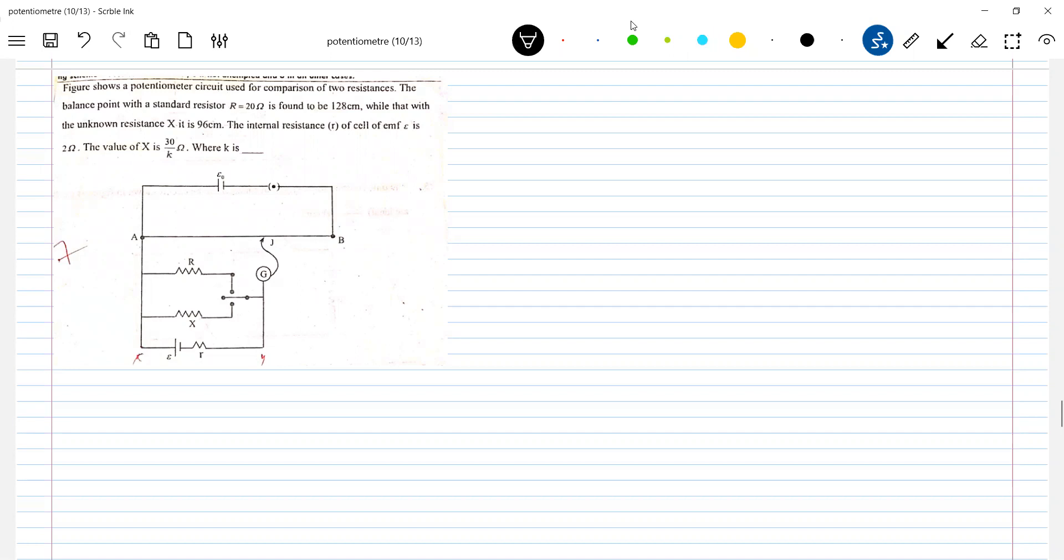To understand the circuit here, we don't have any very big formulas. This is a standard cell. This is a potentiometer wire.